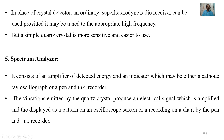In place of the crystal detector, an ordinary superheterodyne radio receiver can be used, provided it may be tuned to the appropriate high frequency. But a simple quartz crystal is more sensitive and easier to use. The last part is the spectrum analyzer. It consists of an amplifier, a detector, and an indicator which may be either a cathode ray oscillograph or a pen-and-ink recorder. The vibrations emitted by the quartz crystal produce an electrical signal which is amplified and displayed as a pattern on an oscilloscope screen or recorded on a chart by the pen-and-ink recorder.